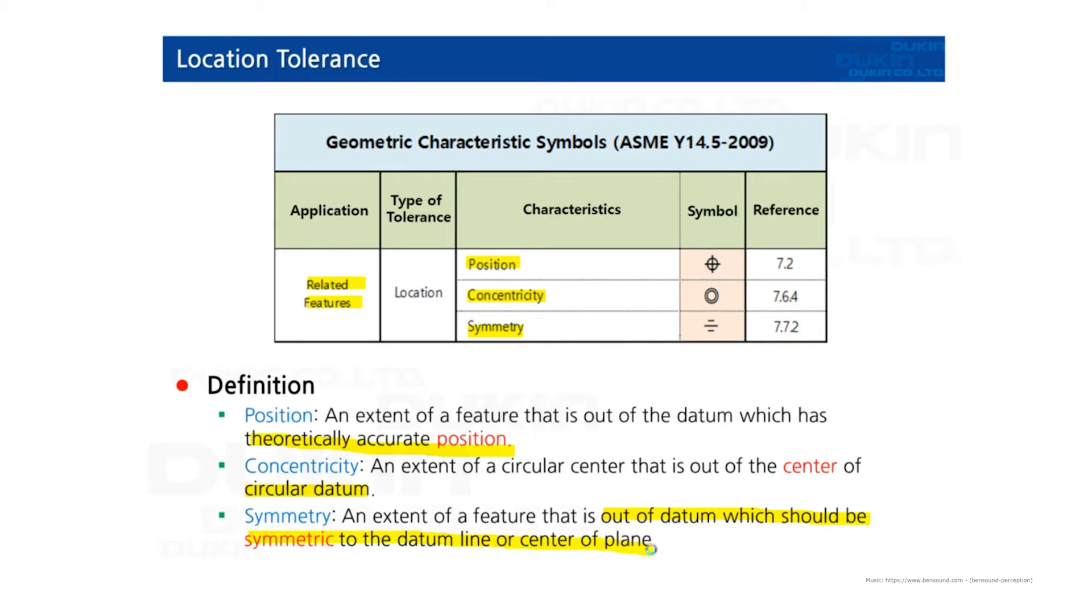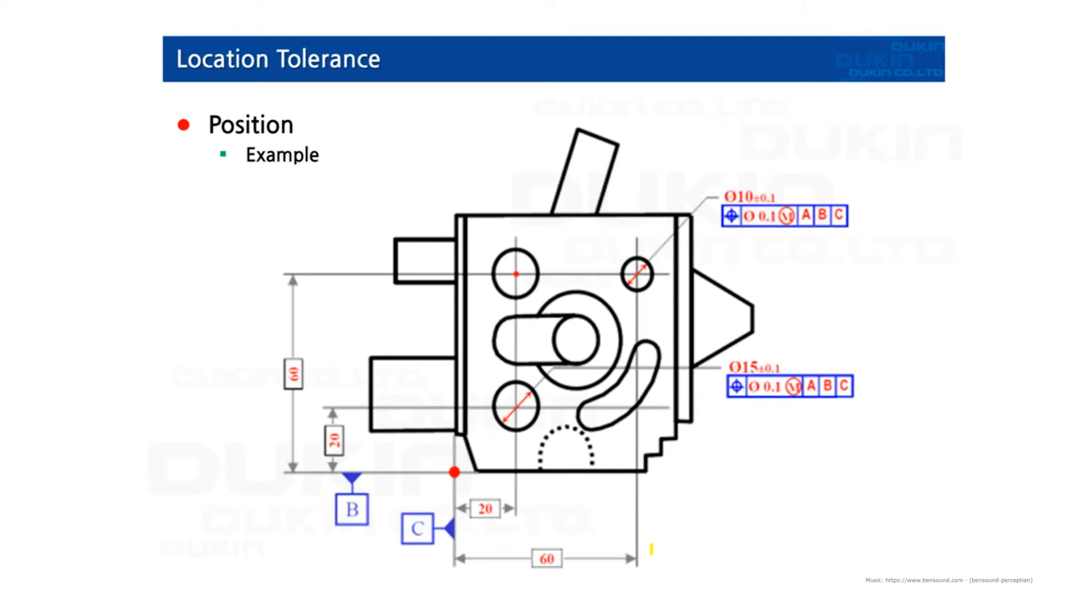Let's look at the practices. First, position tolerance. There are two holes controlled by position tolerance here and here. And datum A is referred to this plane.